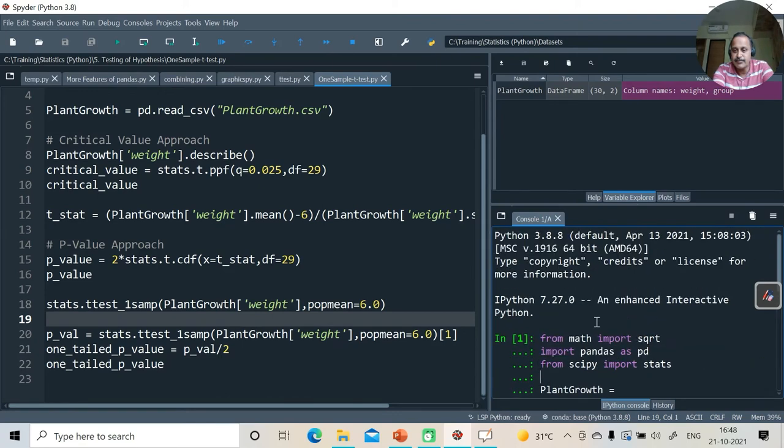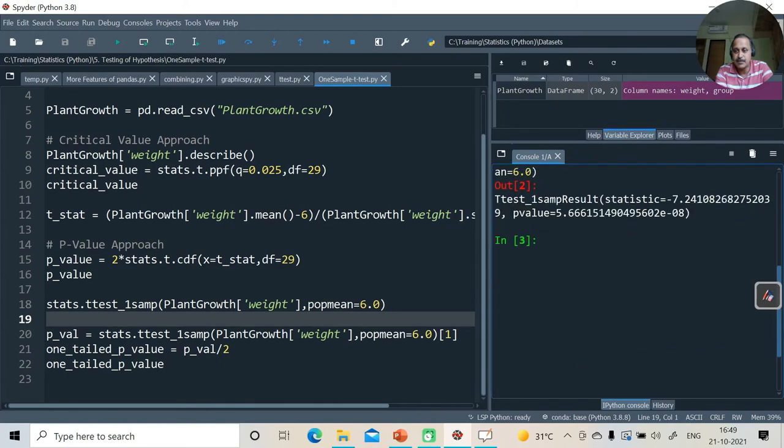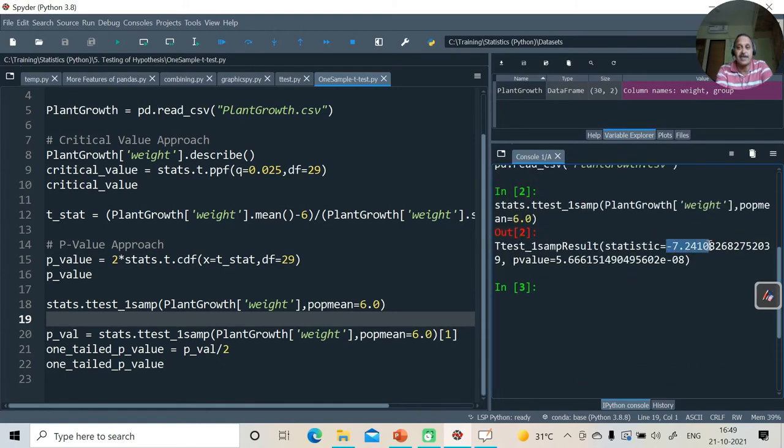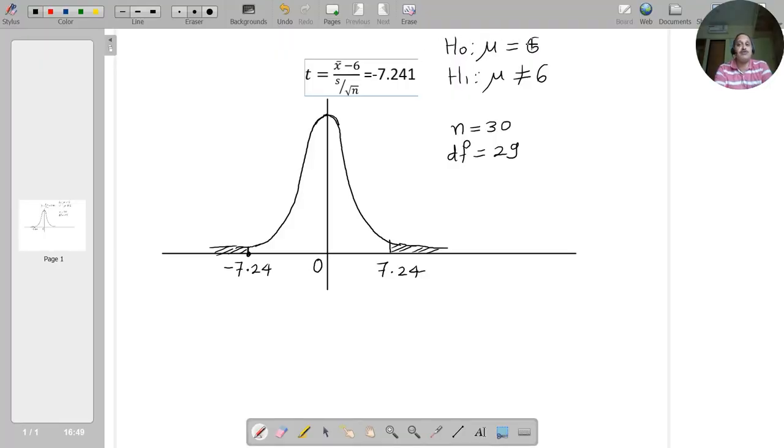This gives us the test statistic as well as the p-value. Let us see that test statistic and the p-value. You have got this test statistic, and the p-value seems to be 5.66 times 10 to the power minus 8, which is quite less than 0.05. Hence we can reject H naught. H naught is mu equals 6. Hence we can say that mu is not equal to 6 at 5% level of significance, not just that, at 1% level of significance also.